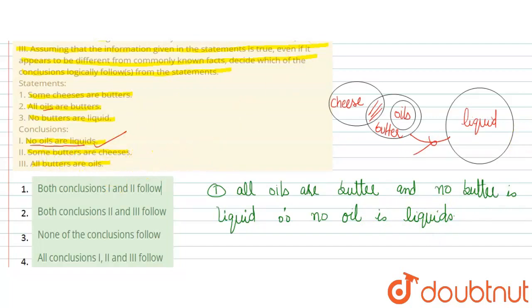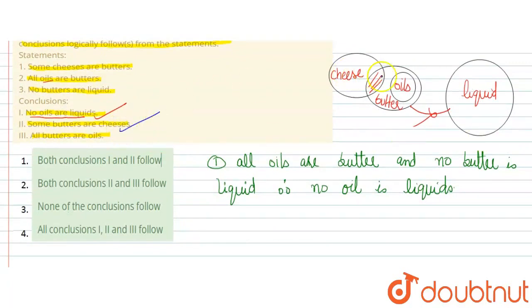Some butters are cheese - some butters are cheese. Is this definitely true? Look at the common part. This common part is cheese. This is correct.